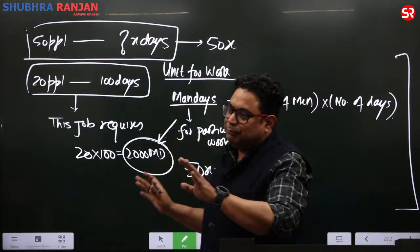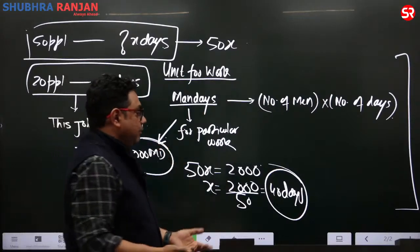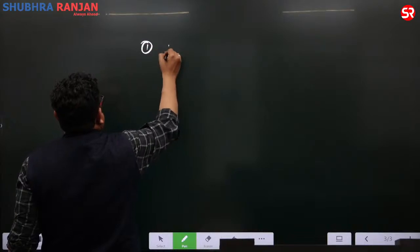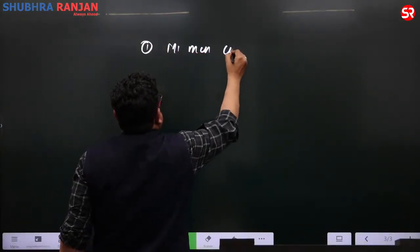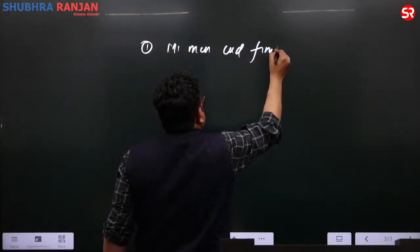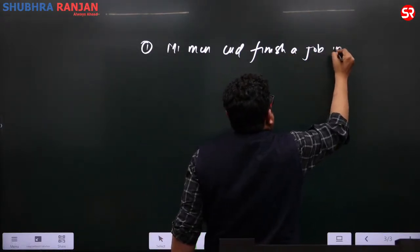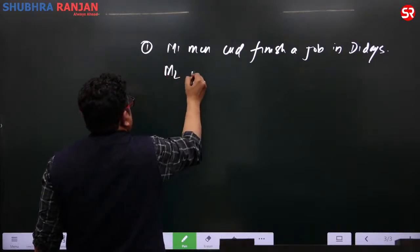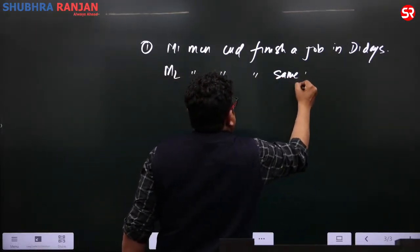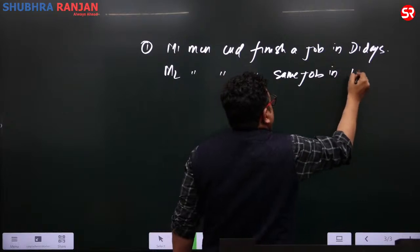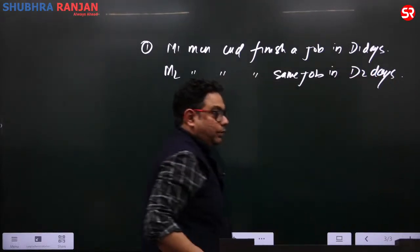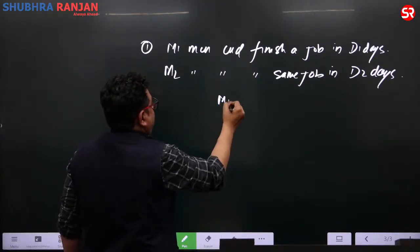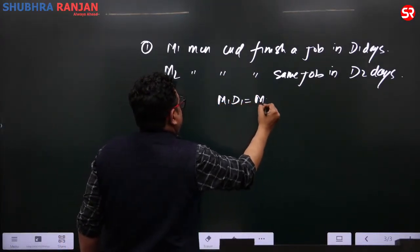Now let us talk about shortcut tricks. Point number one: M1 men could finish a job in D1 days, and M2 men could finish the same job in D2 days. From today onwards, we can write M1 into D1 is equal to M2 into D2. In your exam, if you find this kind of question, put the values and get your answer.